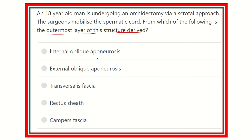Here are the options: internal oblique aponeurosis, external oblique aponeurosis, transversalis fascia, rectus sheath, and Camper's fascia.